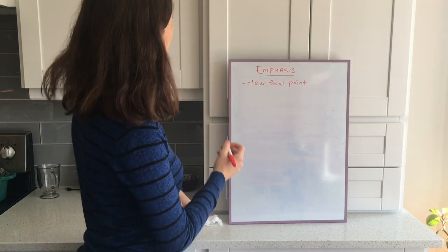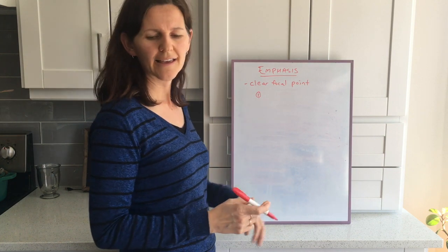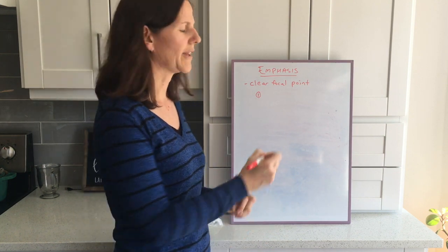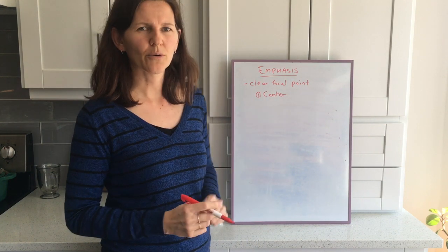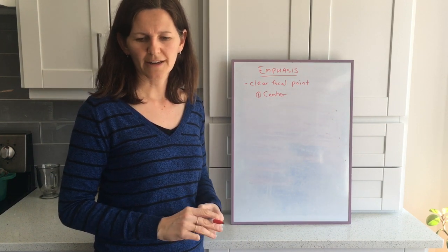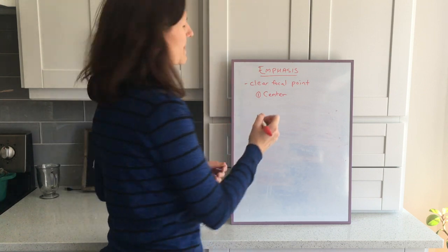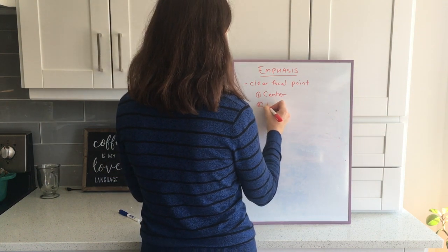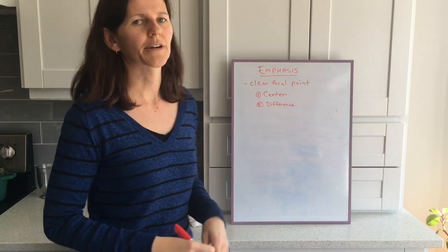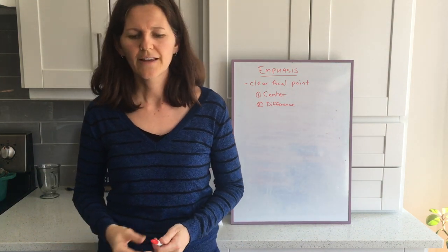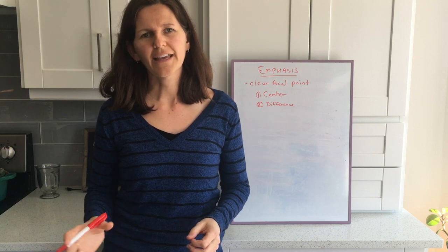Writing these down - the first way you can achieve emphasis is by placing the focal point in the center. Anything in the center is automatically going to get quite a bit of emphasis. That church being right there in the middle is a very obvious way of saying 'this is where I want you to look.' Number two is difference. In this example, the forest surrounding the church is green and dark, while the church itself is white.